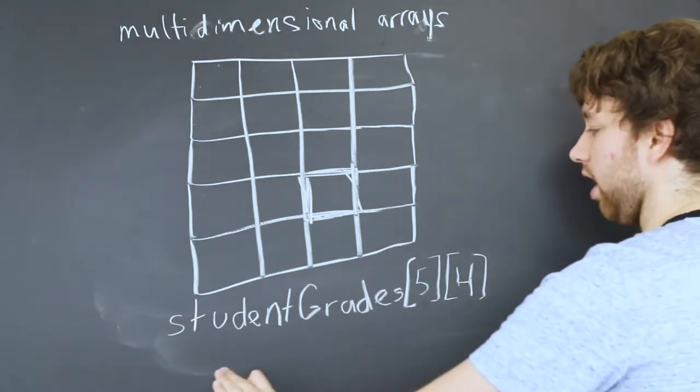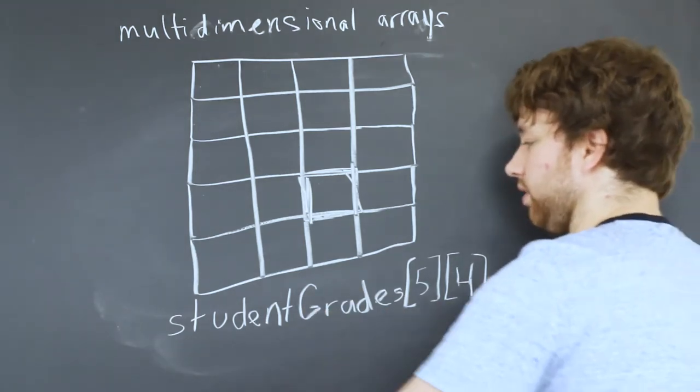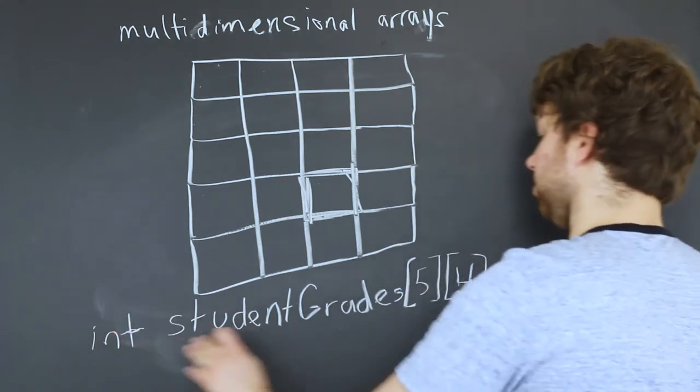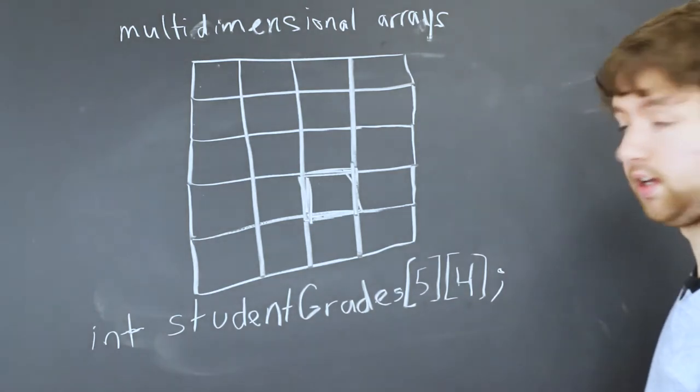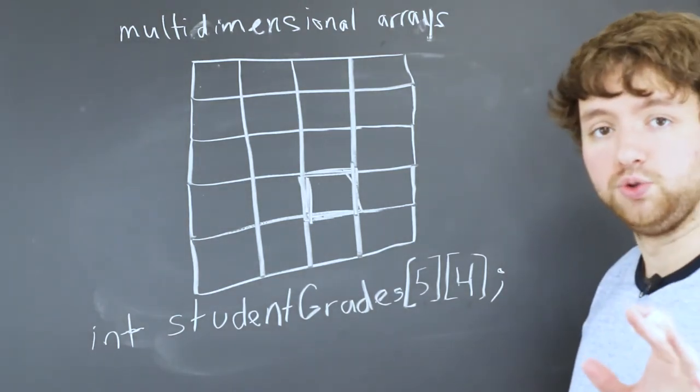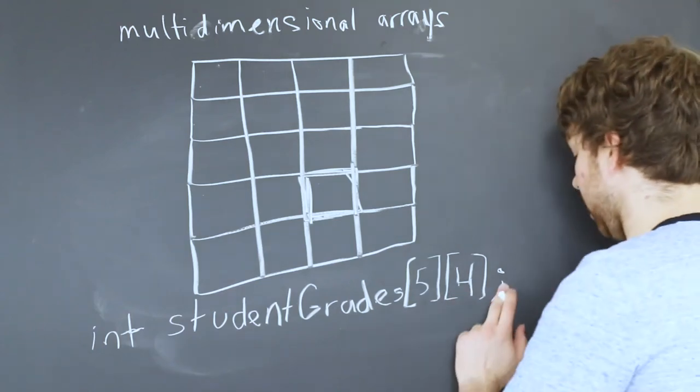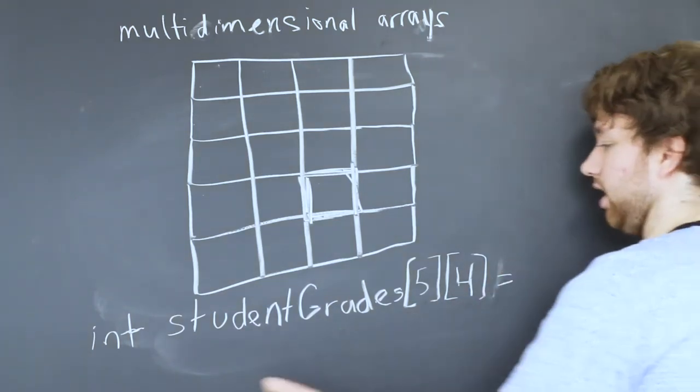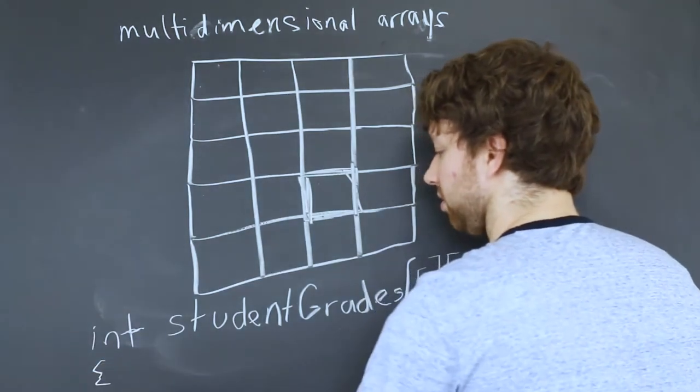Here's what the code would look like. We already declared our array. The way you would declare it is you would first give it a type: int student grades semicolon. Then you could assign each value individually, or you could use the other syntax which I showed you in the single arrays, which would be to set it equal to curly braces.